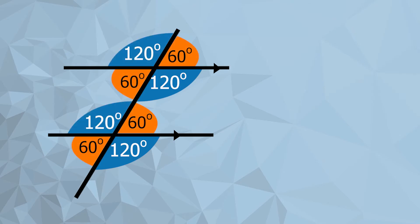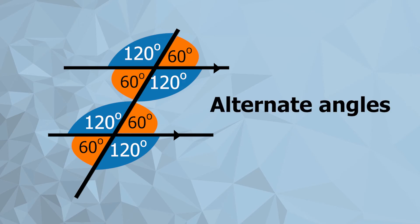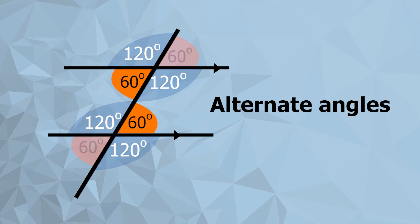The other type we use are alternate angles. When you've got the same angle but it's on opposite sides of the diagonal line — you can see those highlighted there — we call those alternate angles.